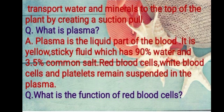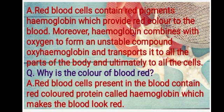Next question: what is the function of red blood cells? Red blood cells contain the red pigment hemoglobin, which provides red color to the blood. Moreover, hemoglobin combines with oxygen to form an unstable compound, oxy-hemoglobin, and transports it to all the parts of the body and ultimately to all the cells.